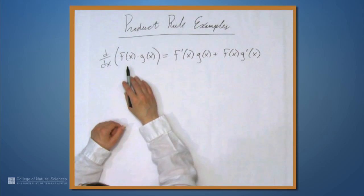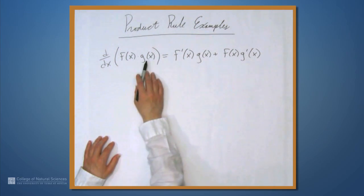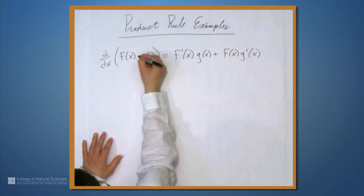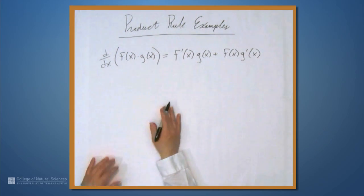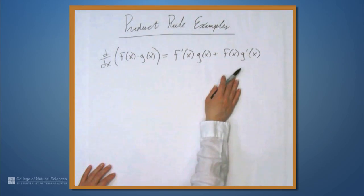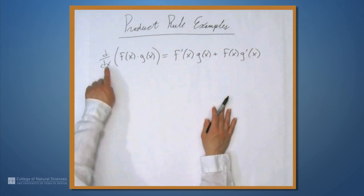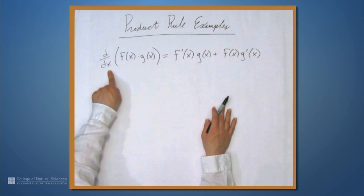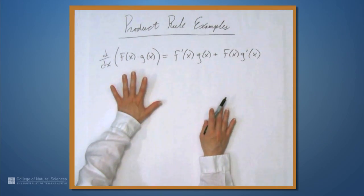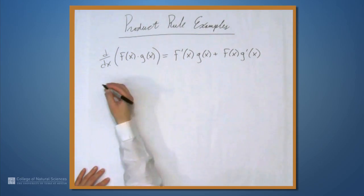This may be the first differentiation rule you've seen that tells you how to differentiate a combination of two functions that's not just straightforward like a sum or difference. The formula is maybe not what you expect either. In particular, it is not the derivative of f times the derivative of g. Never write that down — terrible, terrible, terrible. So let's look at some examples.